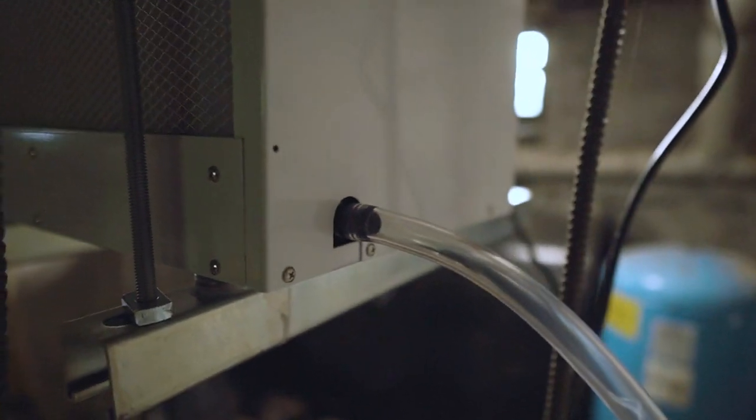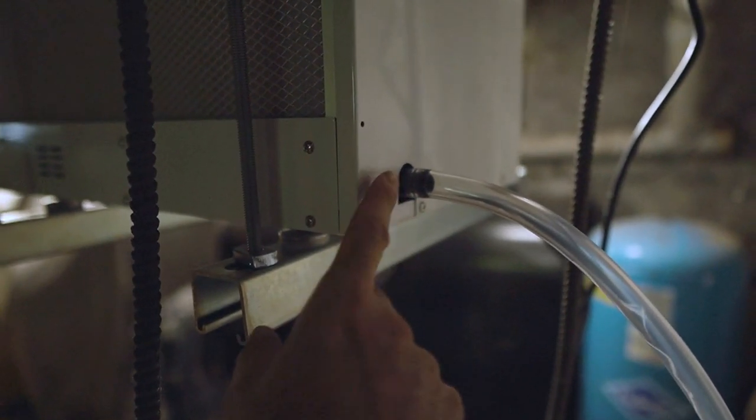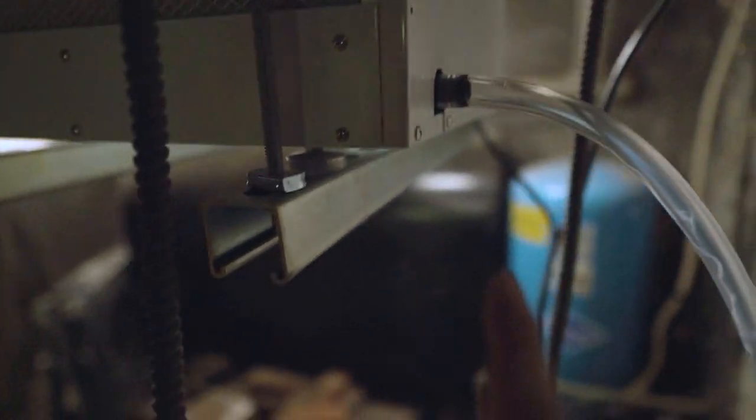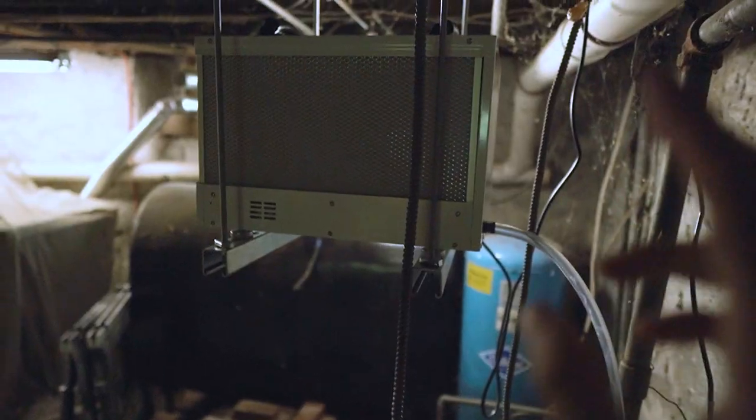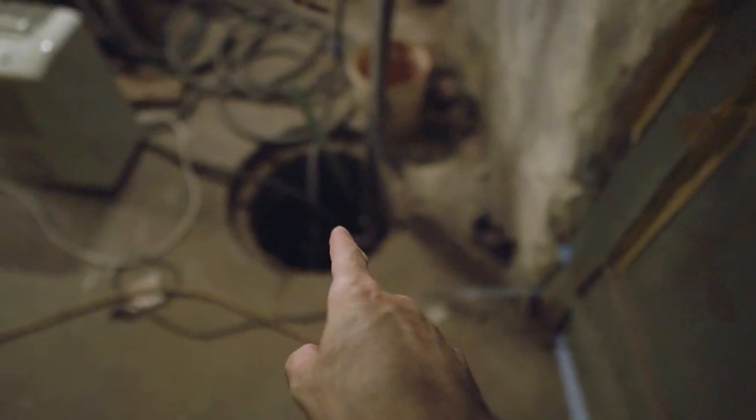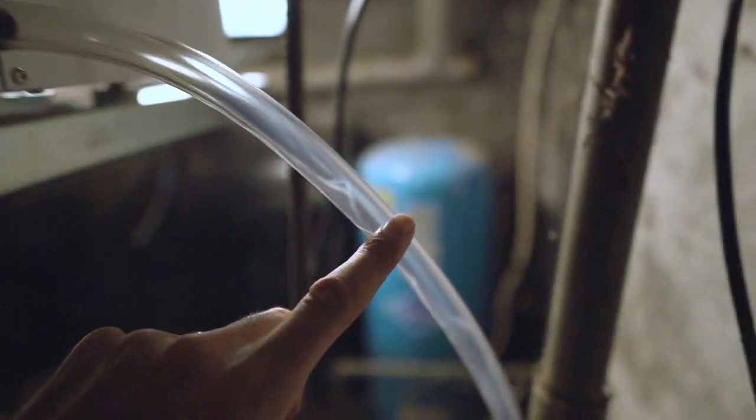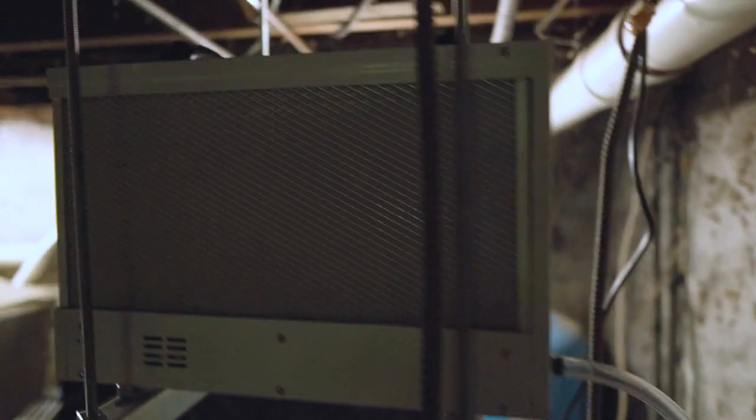Now this is the gravity fed model. You can get models that have an internal condensate pump. So if you need to pump the condensation upwards and out, you should look into the one that has the integral pump. Now I knew I was going to mount this up high and directly over my sump well. So it comes with this tube here. So I just have this tube zip tied and it just gravity feeds down into my sump.